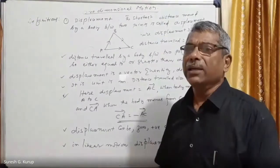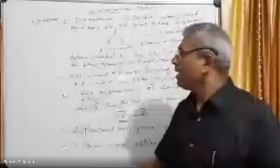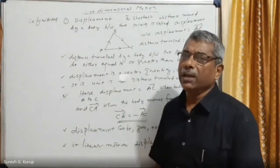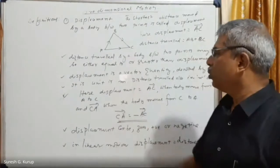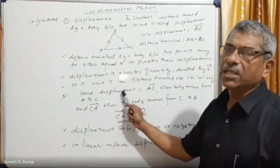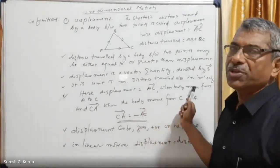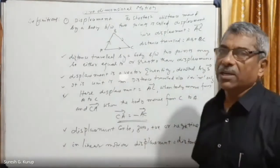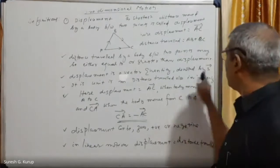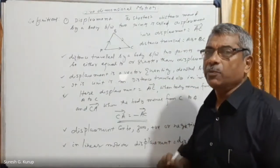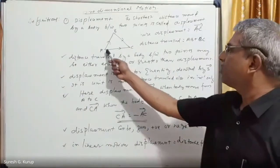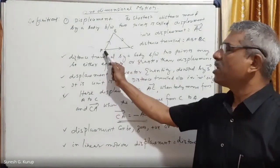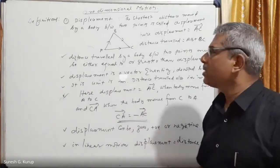Distance traveled is always greater than or equal to displacement. If a body moves in a perfectly straight line, then distance traveled equals displacement. Displacement is the shortest distance traveled. In the SI system, the unit of both distance and displacement is the meter. Displacement is denoted by the vector symbol S.